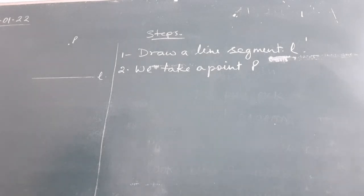And we also take a point on line segment L. You can name it S, Q. So, P and Q. These are the two points taken. Now, in the third step,